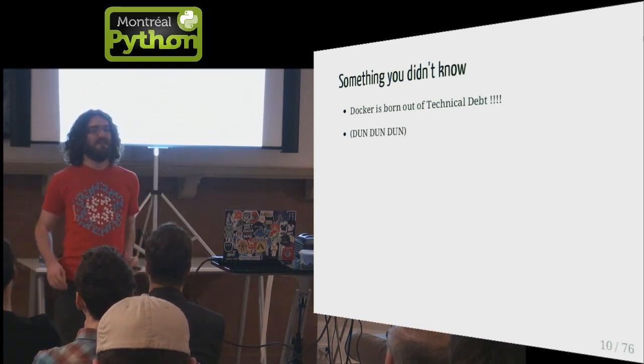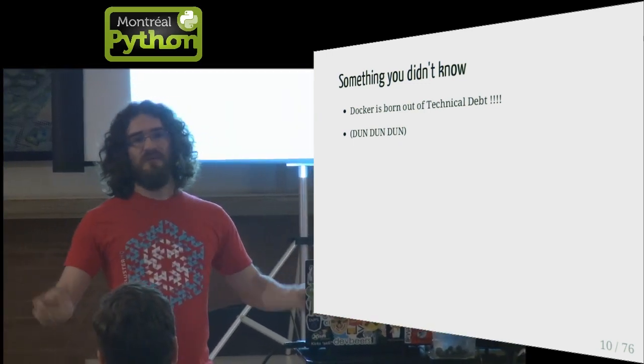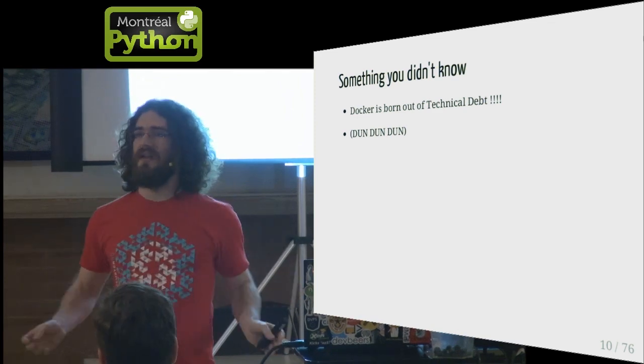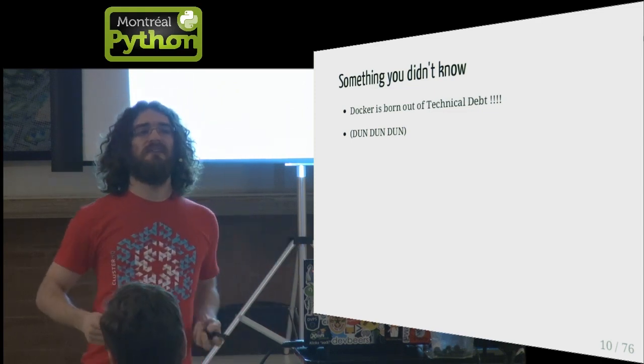Docker is born out of technical debt. At some point when we had dotCloud, everybody was burning out — stuff was breaking all the time. We needed to rewrite the core of our engine because we couldn't stand it anymore. That rewrite was Docker. We showed it to a few garage startups in the Bay Area like Twitter and GitHub, and they said 'that's great, we want more of this.' So we put more engineers on it, and on and on, until almost nobody was left working on dotCloud and everybody was working on Docker.